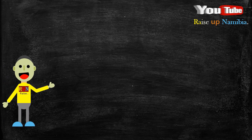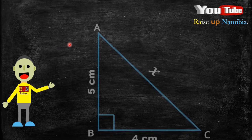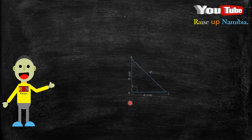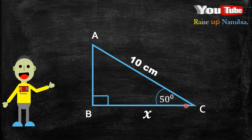Hey there! In the previous video we spoke about how to find one side of a triangle when you are given two sides, and we did that by using the Pythagoras theorem. Now in this video we are going to be looking at how to find one side of a triangle when you are given only one angle and one side of a triangle. So to find out how to do this, stay tuned.